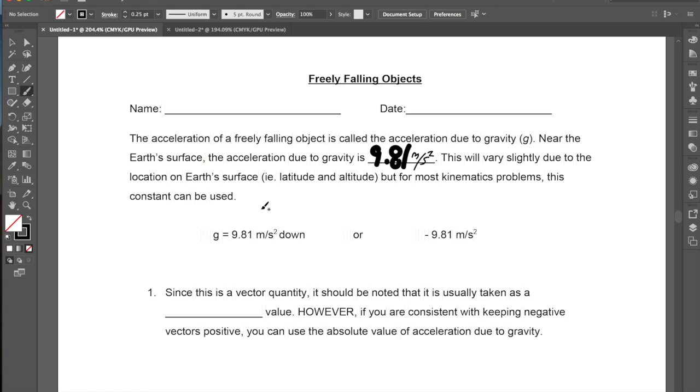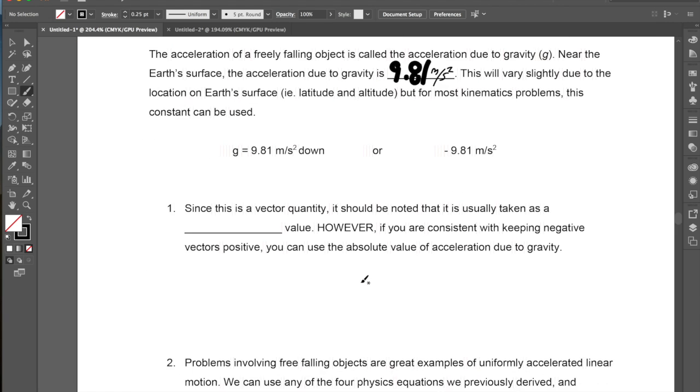Now this will vary slightly due to the location on Earth's surface, i.e. the latitude and the altitude that someone is at, but for the majority of kinematics problems, we can use this constant, that gravity, or g, is 9.81 meters per second down, or negative 9.81 meters per second squared.